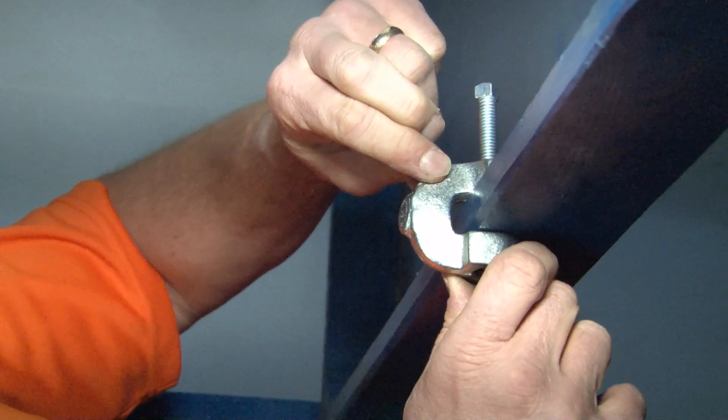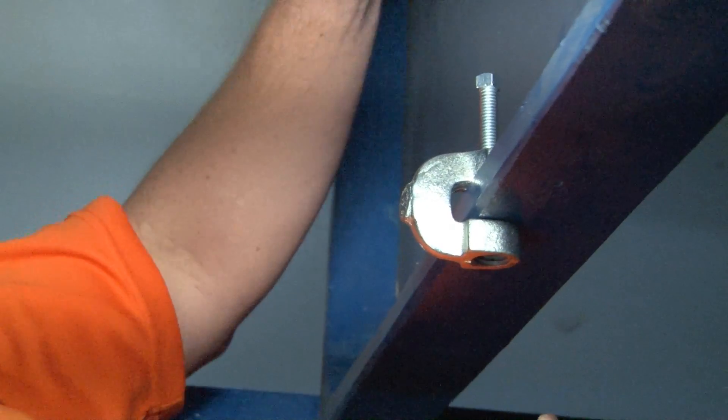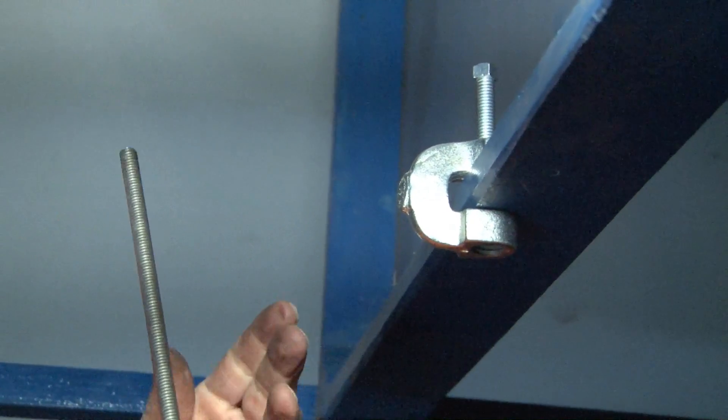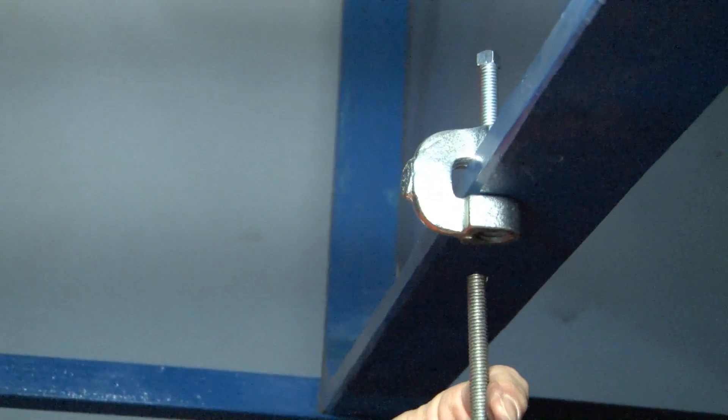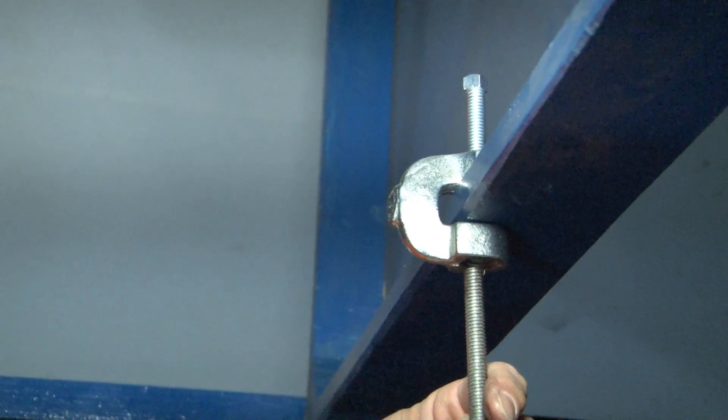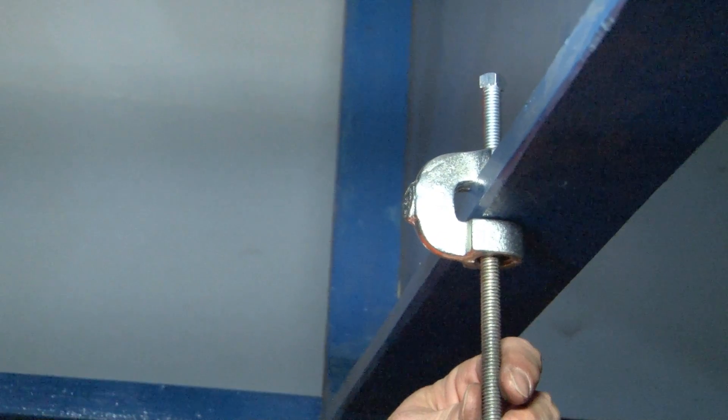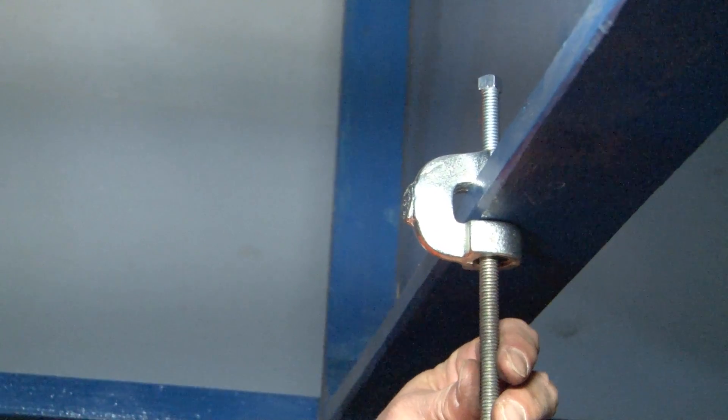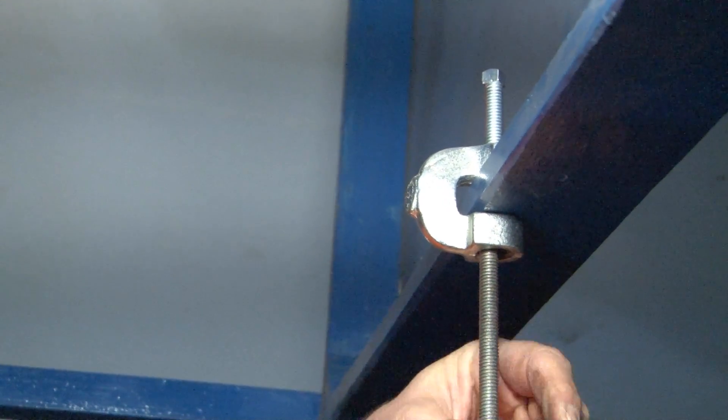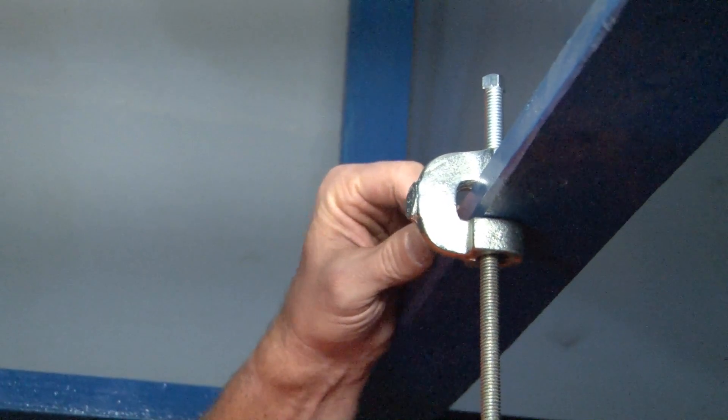Once it's securely on there, you're now ready to take your three-eighths inch, half-inch, five-eighths, or three-quarter inch threaded rod, insert it into the beam and screw it into place until it hits directly on the bottom of the beam.